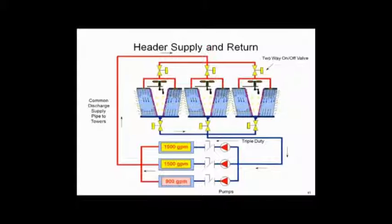Let's go to a header supply and return, which I think might be the most common way that we see towers and chillers and pumps piped on the condenser water side. Again, back to my three 500 ton towers, and I've got my three chillers: 1500, 1500, and 900 GPM. So now I've got one set of pipe, that red pipe, one common pipe to all three cells going out with my 95 degree water, and one common pipe coming back with my 85 degree water.